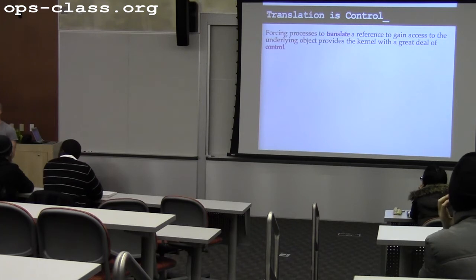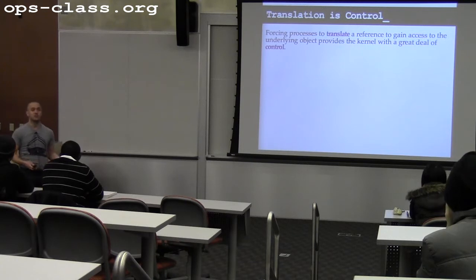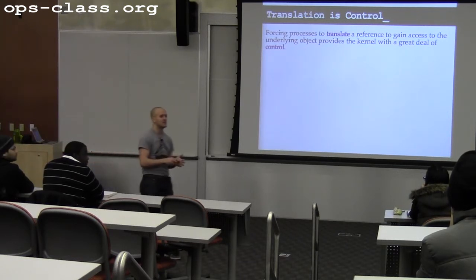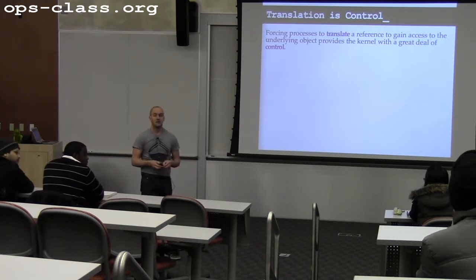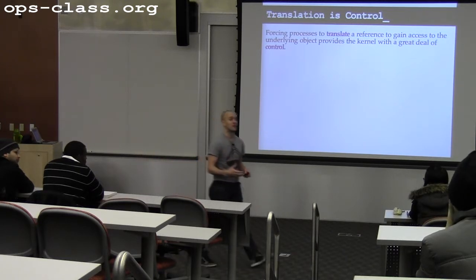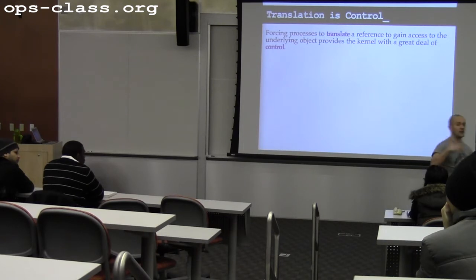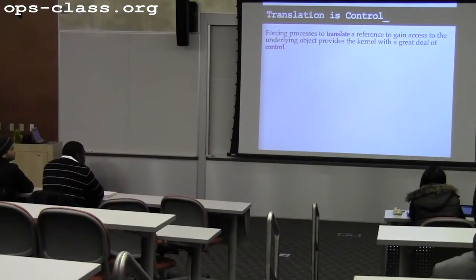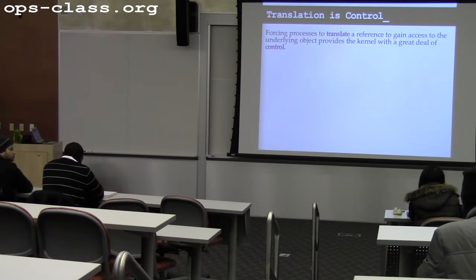What else can I do? I can change the reference itself — I can change what it points to. What's another form of alteration? I could revoke references. I can say I'm not going to translate that for you anymore. Because the process never really knew what was behind that reference, there's no way for it to get at it anymore. I've put myself in control of the process's ability to use a particular resource.